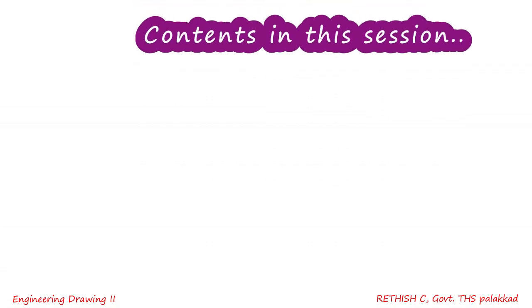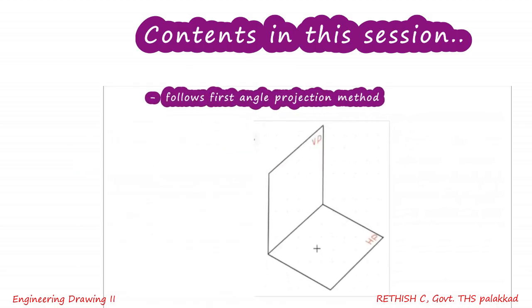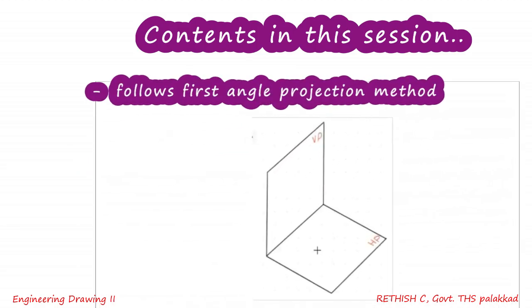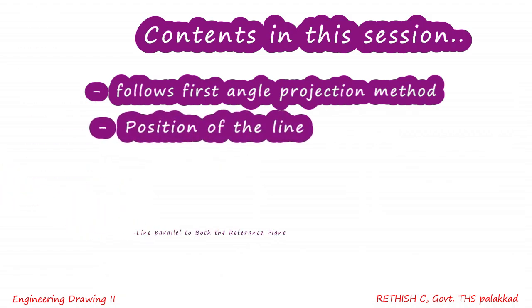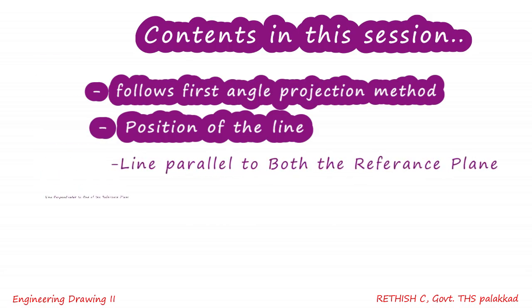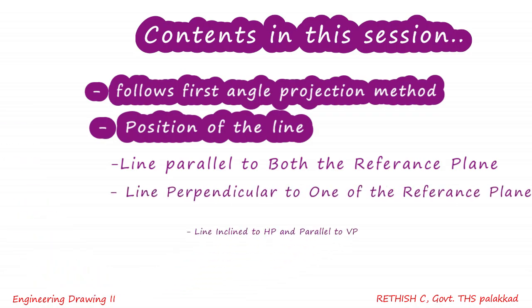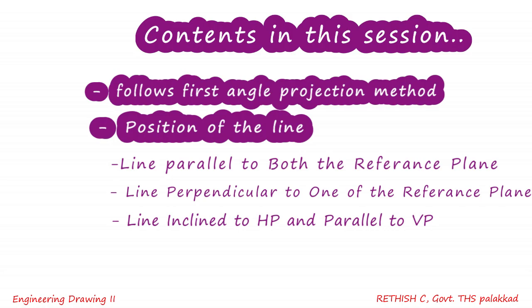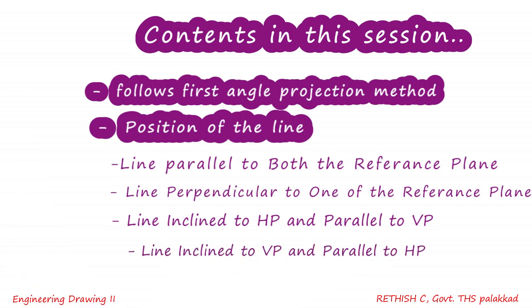Let us go through the examples. Before that, let us check what topics we are going to cover in this session. In all the examples we follow the first angle projection method, meaning the lines lie in the first quadrant only. The positions of the lines covered are: line parallel to both reference planes, line perpendicular to one reference plane, line inclined to HP and parallel to VP, and line inclined to VP and parallel to HP.